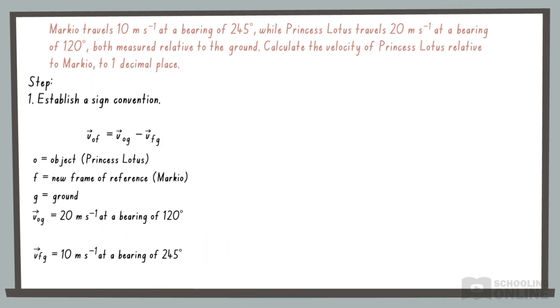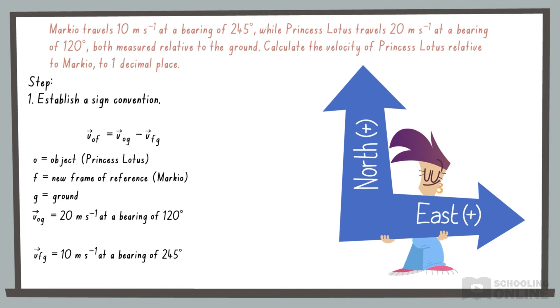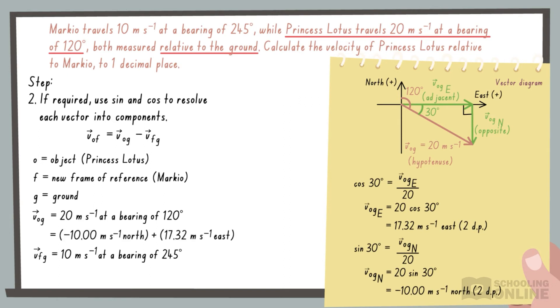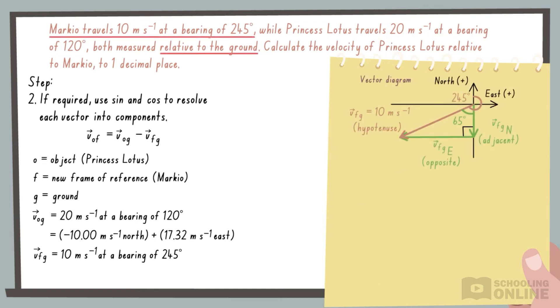Firstly, let's make north and east the positive directions. VOG points 30 degrees south of east. Using trigonometry, we resolve this vector into north and east components. Likewise, VFG is 65 degrees west of south, and we resolve this into perpendicular components.